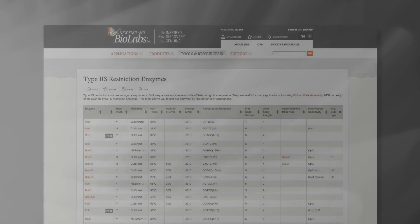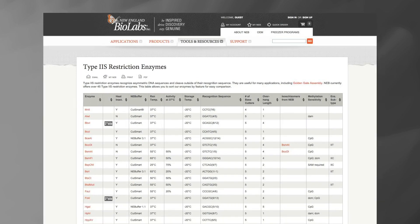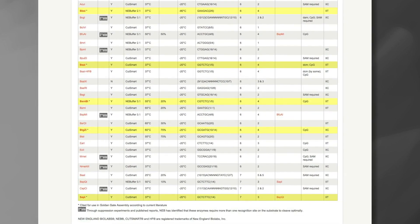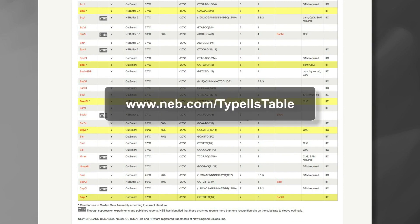For a list of other type 2S restriction enzymes that can be used for golden gate assembly or other applications, please visit www.neb.com/TypeIISTable.